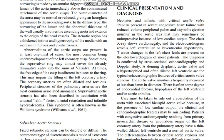A doming, dysplastic aortic valve and a hypertrophied and often dilated left ventricle are the typical echocardiographic features of critical aortic valve stenosis. The aortic valve annulus is frequently measured at less than 6 mm in diameter. There is often some degree of endocardial fibrosis and hypoplasia of the left ventricle or aortic annulus.